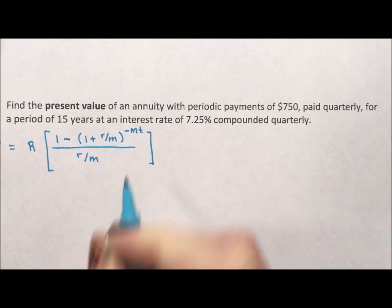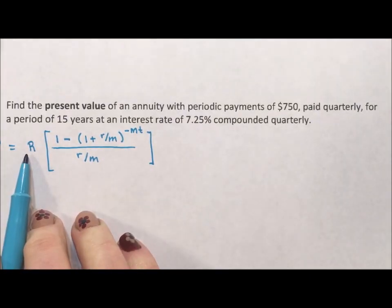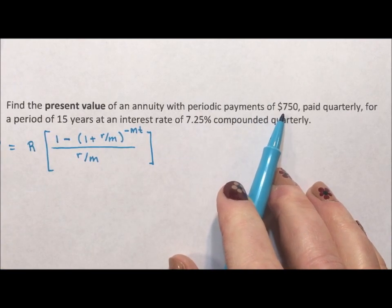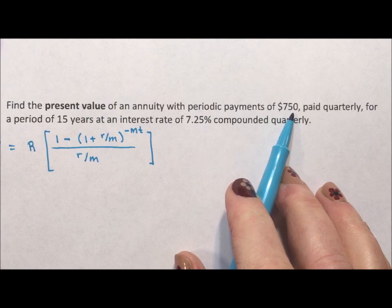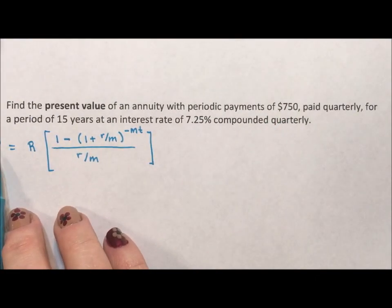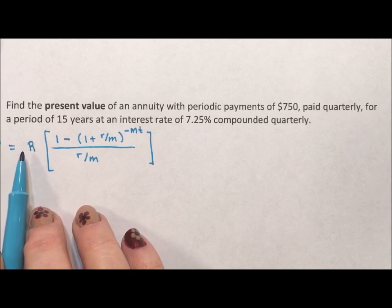So what this formula is doing is it says, basically, if you're paying payments of $750 for 15 years, what amount of loan are you paying off?